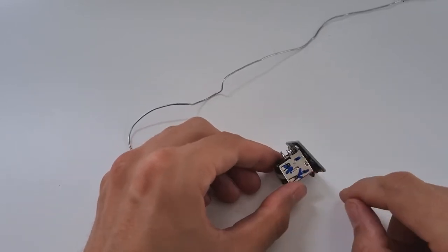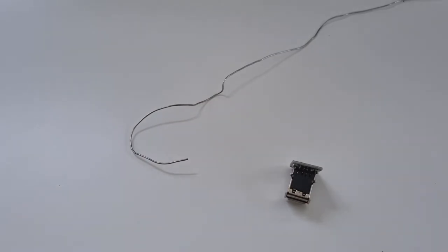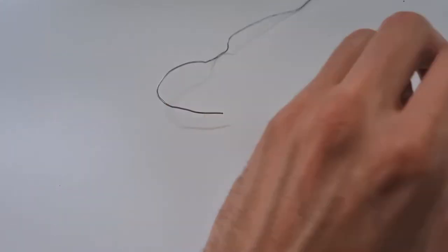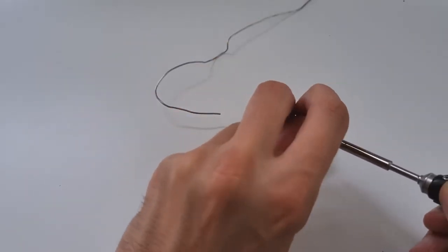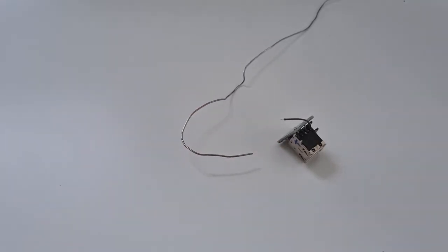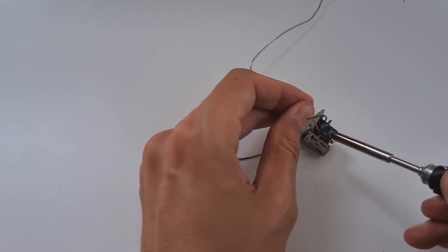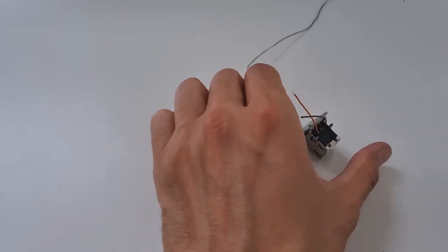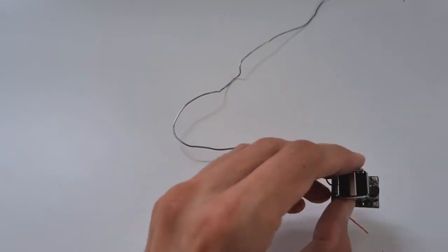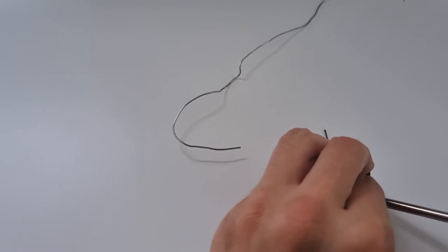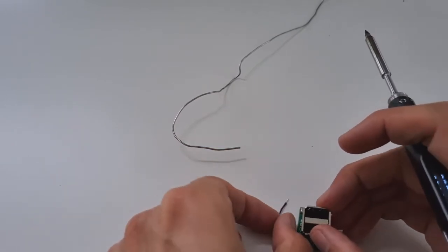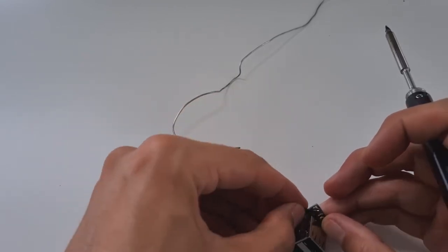So this should be the negative of the fan, and this now needs to connect to the inputs of the DC converter. So this is already the positive input, so we can directly solder that onto here. And this already is the negative, and we can solder it directly onto the negative terminal here.